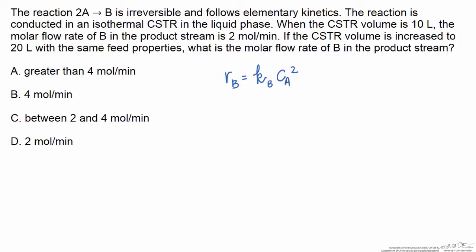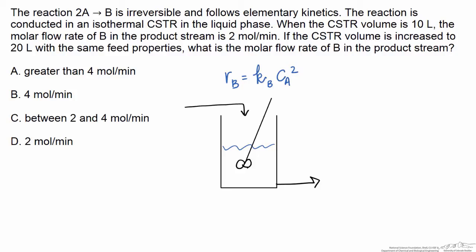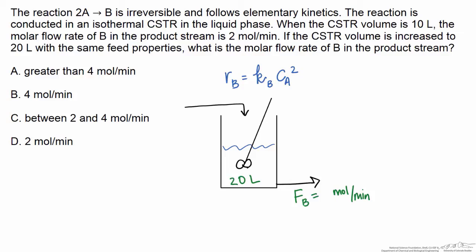This reaction is occurring inside a CSTR, and it's a liquid phase reaction. We can draw our little cartoon here. The information we're given is that when the CSTR is 10 liters, we have an outlet flow rate of our product, component B, of 2 moles per minute. In this problem we're asked to determine how this flow rate will change if we make no other change except to change this 10 liter reactor volume to 20 liters, but still operating with the same feed conditions.